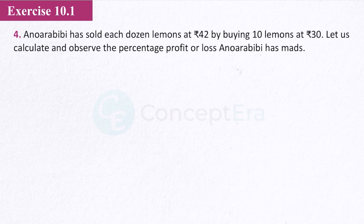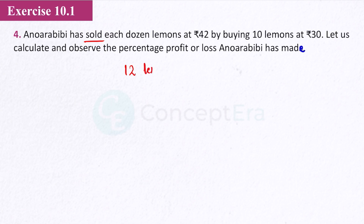Next question: Anora BB has sold each dozen lemons at Rs. 42, by buying 10 lemons at Rs. 30. We need to calculate the percentage profit or loss she made. Sold means selling price. So 12 lemons — each dozen — selling price is Rs. 42. And 10 lemons cost price is Rs. 30. The selling price and cost price are for different quantities, so we convert to a standard value.